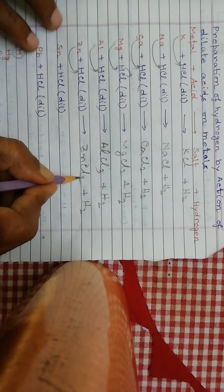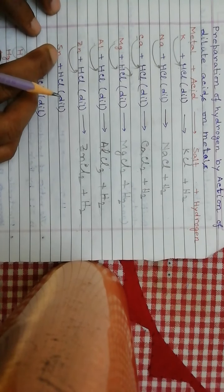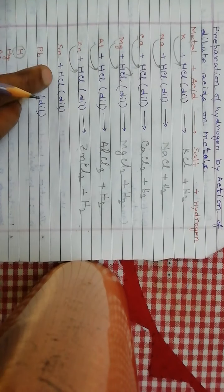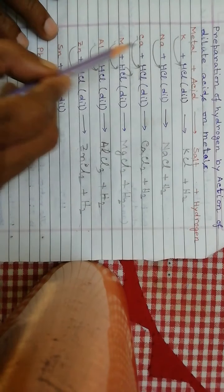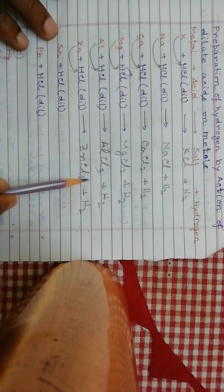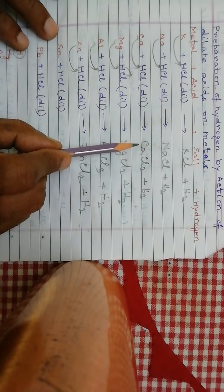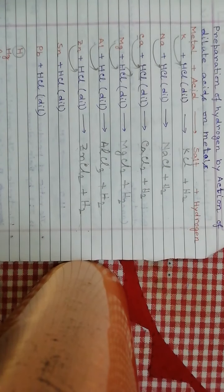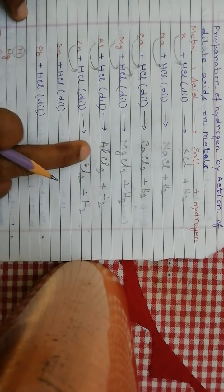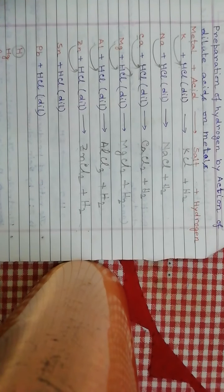The valency of zinc is 2, so zinc chloride is ZnCl₂ plus hydrogen. In the same way, the remaining metals above hydrogen also react with hydrochloric acid. When metals react with hydrochloric acid they form chloride salts — potassium chloride, sodium chloride, calcium chloride, magnesium chloride, and so on. This is how we prepare hydrogen gas from the reaction of metals with dilute hydrochloric acid.